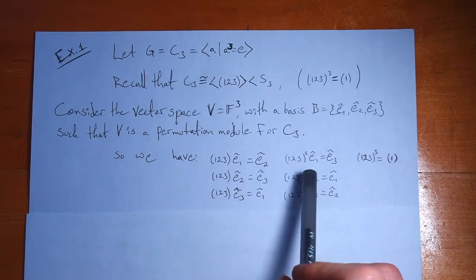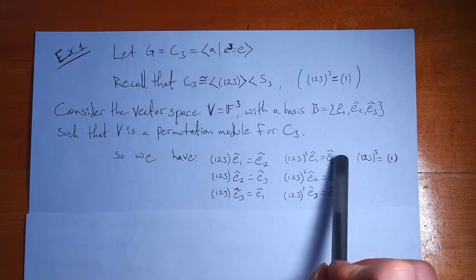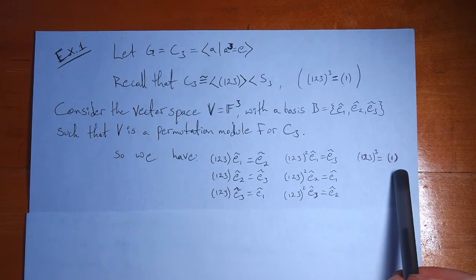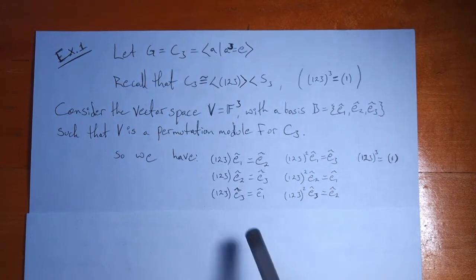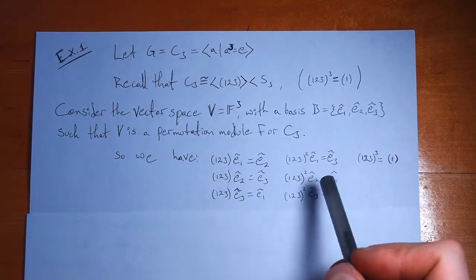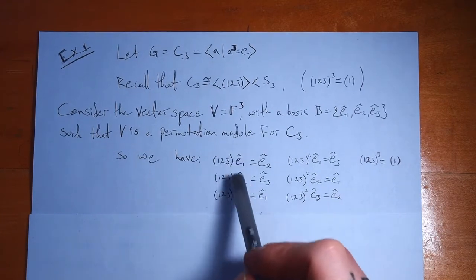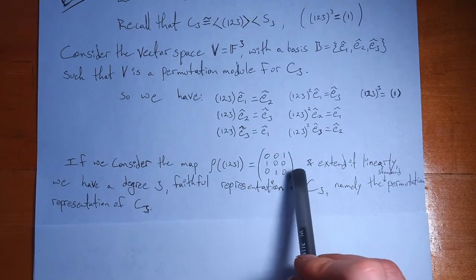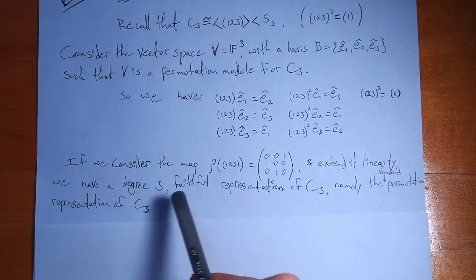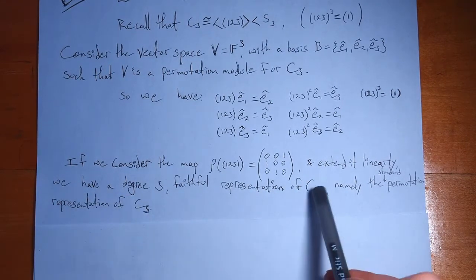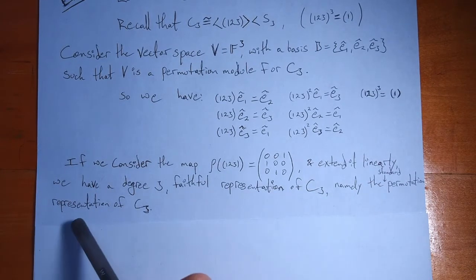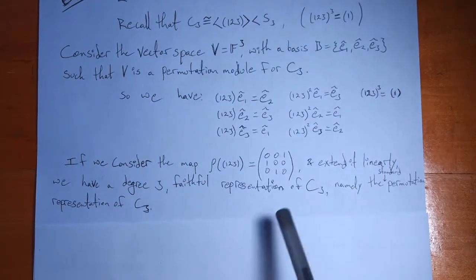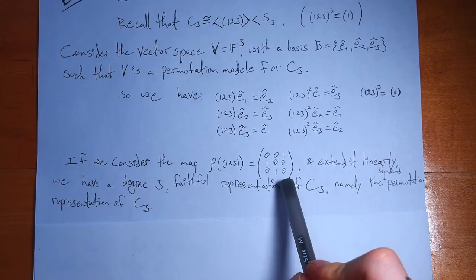There are three elements in our group: the generator (1,2,3), then (1,2,3)^2 which sends 1 to 3, 2 to 1, and 3 to 2, and then (1,2,3)^3 which is just the identity. So the action for the identity is just the identity action. That's a permutation module — we know how all group elements act on all vectors because the action is linear and all vectors are linear combinations of basis vectors. If we consider the map ρ sending the generator (1,2,3) to the corresponding permutation matrix and extend linearly, we have a degree-3 faithful representation of C_3: the standard permutation representation of C_3. It's faithful because only the identity matrix sends all basis vectors to themselves, and this matrix cubed does in fact give the identity.